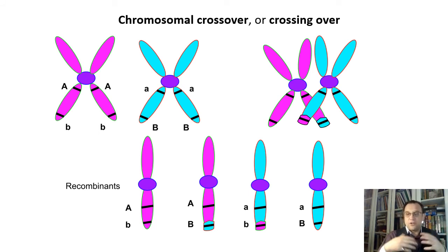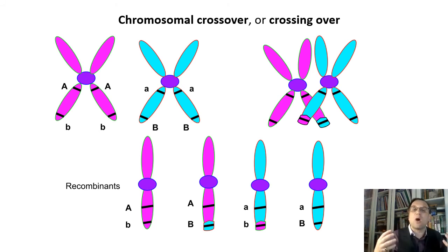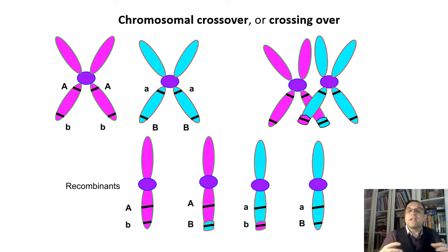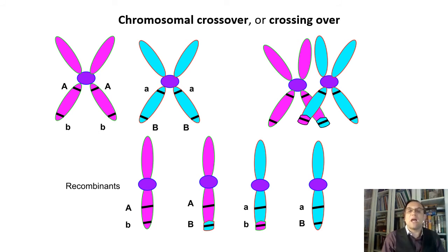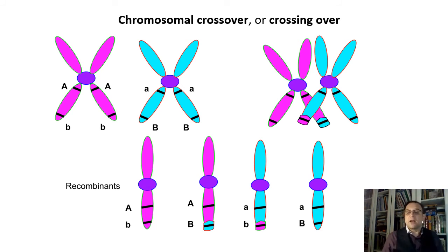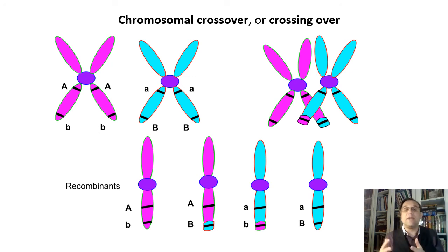Crossing over also accounts for genetic variation: due to the swapping of genetic material during crossover, the chromatids held together by the centromere are no longer identical. So when chromosomes go on to meiosis II and separate, some daughter cells receive daughter chromosomes with recombinant alleles — another form of a gene. Due to this genetic recombination, offspring have a different set of alleles and genes than their parents. For example, in the diagram, genes B and b are crossed over with each other, making recombinants after meiosis.